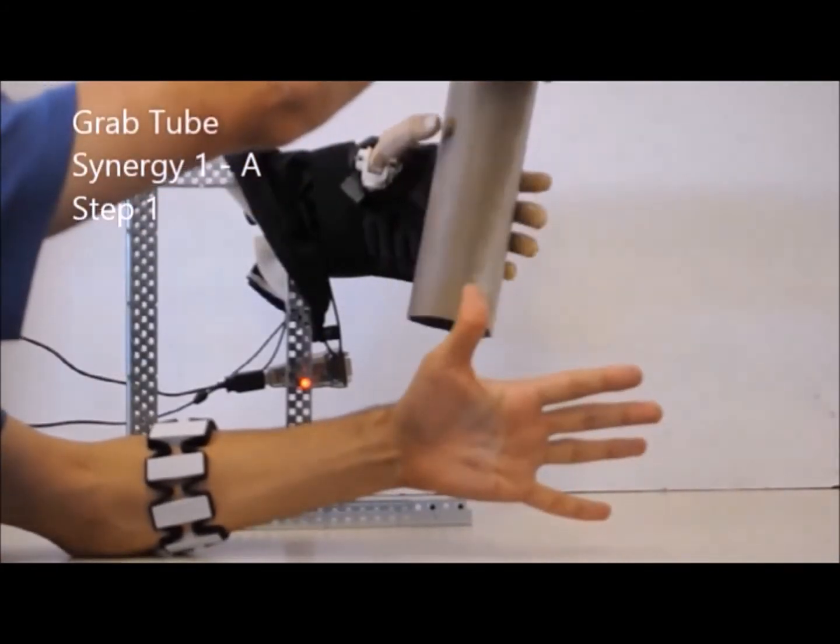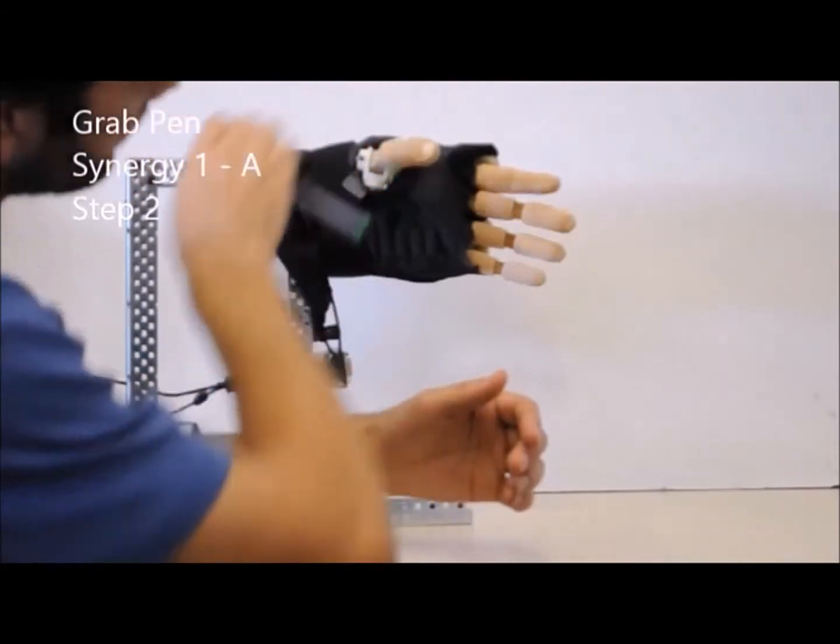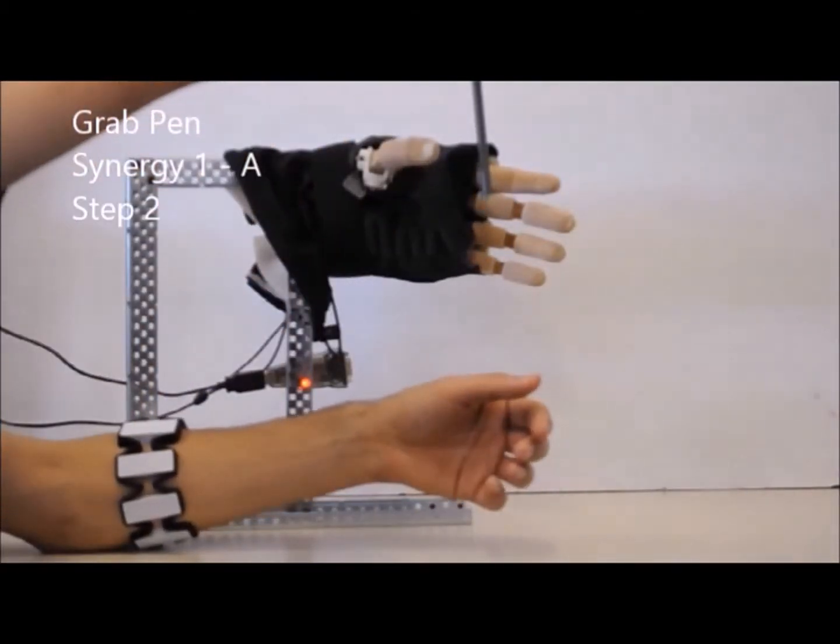In this way, only with the first synergy, the hand is able to achieve 21 out of the 33 grasped forms.